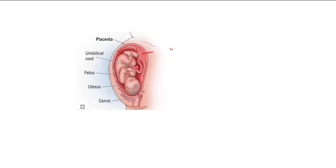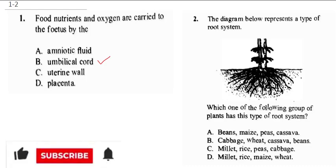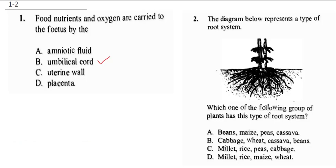Looking at our options again, the correct option is actually the umbilical cord. The amniotic fluid is the fluid that surrounds the baby in the womb, and the uterine wall is the wall in which the baby stays. So the correct answer is B.